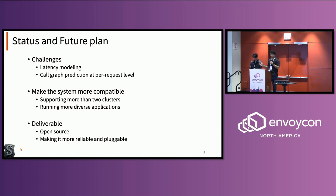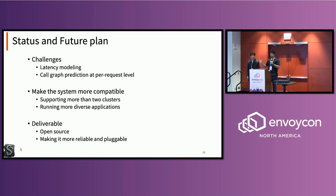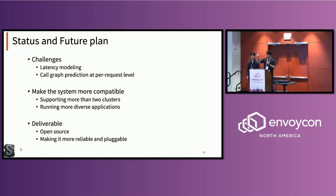As for status and future plans, there are some current challenges. Latency is hard to model due to resource interference and other conditions. Call graph prediction at the per-request level has not been done before — there are all sorts of things in requests that could trigger different call graphs, and caching makes it hard. We're also working on making the system more compatible — right now it only supports two clusters, and we want to expand to as many clusters as needed. One primary goal is pluggability using WebAssembly plugins so you can apply it with one kubectl command and it's installed in your cluster.